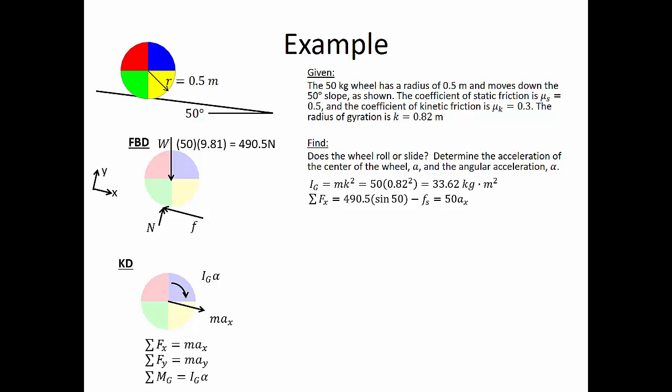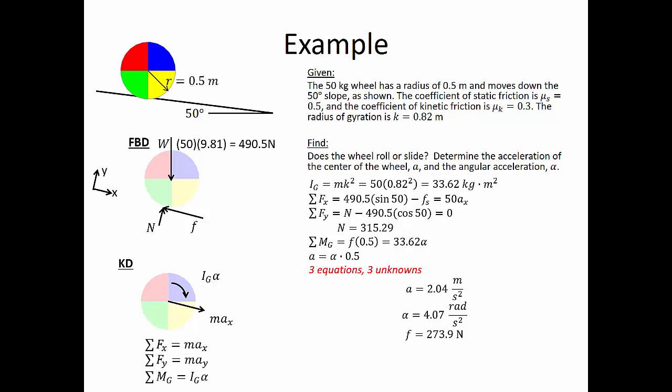Summing forces in the x direction, we have the component of the weight, 490.5 times the sine of 50, minus friction, equals mass times acceleration. We're making the assumption that the wheel is going to roll. Summing forces in the y direction, normal force minus 490.5 times the cosine of 50 equals zero, so our normal force turns out to be 315.29 newtons. Summing moments about the center of gravity, we have friction times the radius 0.5 — the normal force and weight go through the center so they don't contribute — equal to our mass moment of inertia times angular acceleration. Based on our assumption, acceleration equals angular acceleration times 0.5. Solving simultaneously, acceleration is 2.04 m/s², angular acceleration is 4.07 rad/s², and friction is 273.9 newtons.